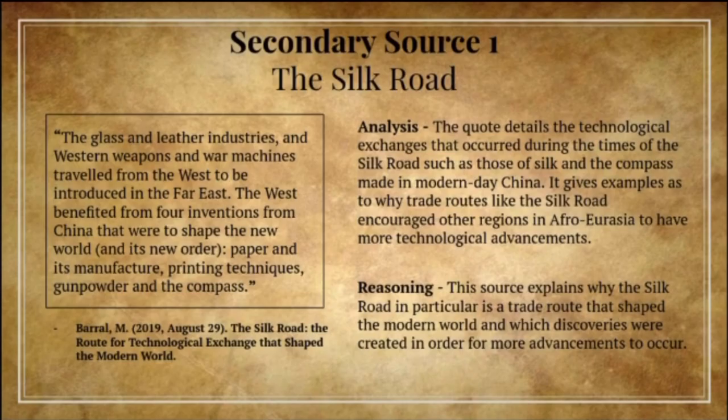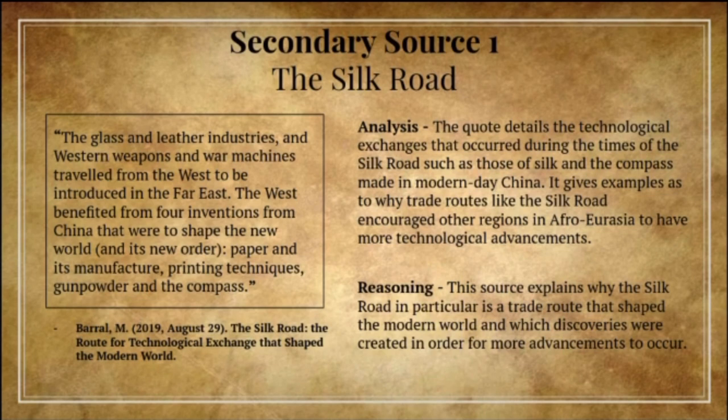Secondary Source 1: The Silk Road. Analysis: The quote details the technological exchanges that occurred during the times of the Silk Road, such as those of silk and the compass made in modern-day China. It gives examples as to why trade routes like the Silk Road encouraged other regions in Afro-Eurasia to achieve more technological advancements. Reasoning: This source explains why the Silk Road in particular is a trade route that shaped the modern world and which discoveries were created in order for more advancements to occur.